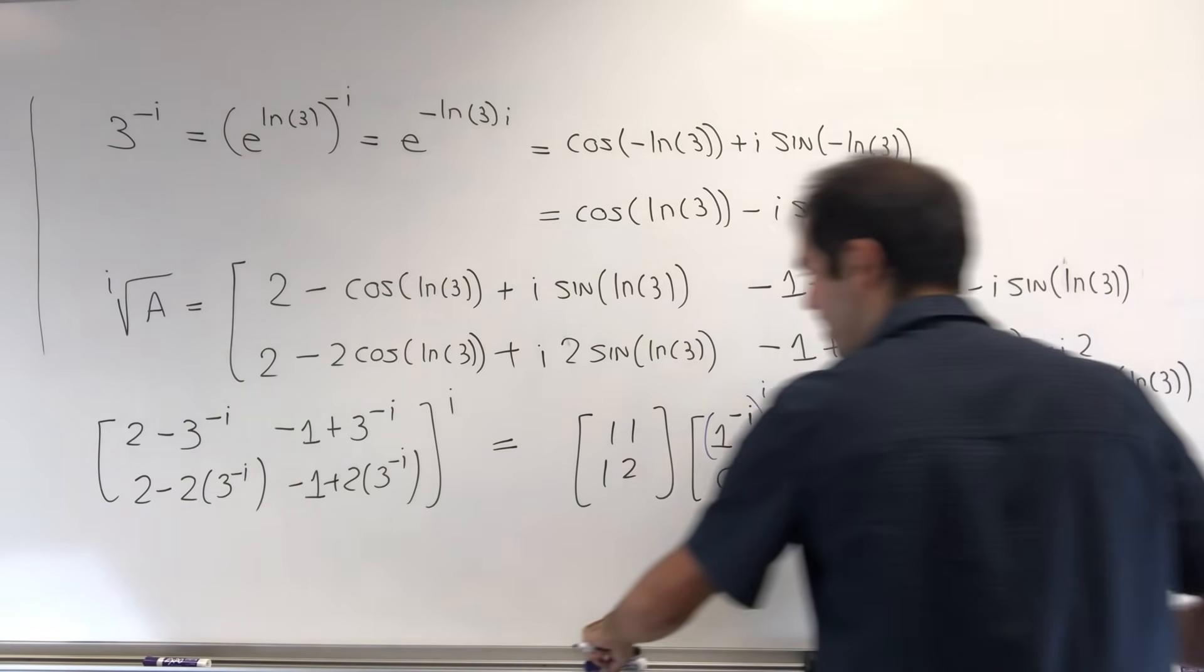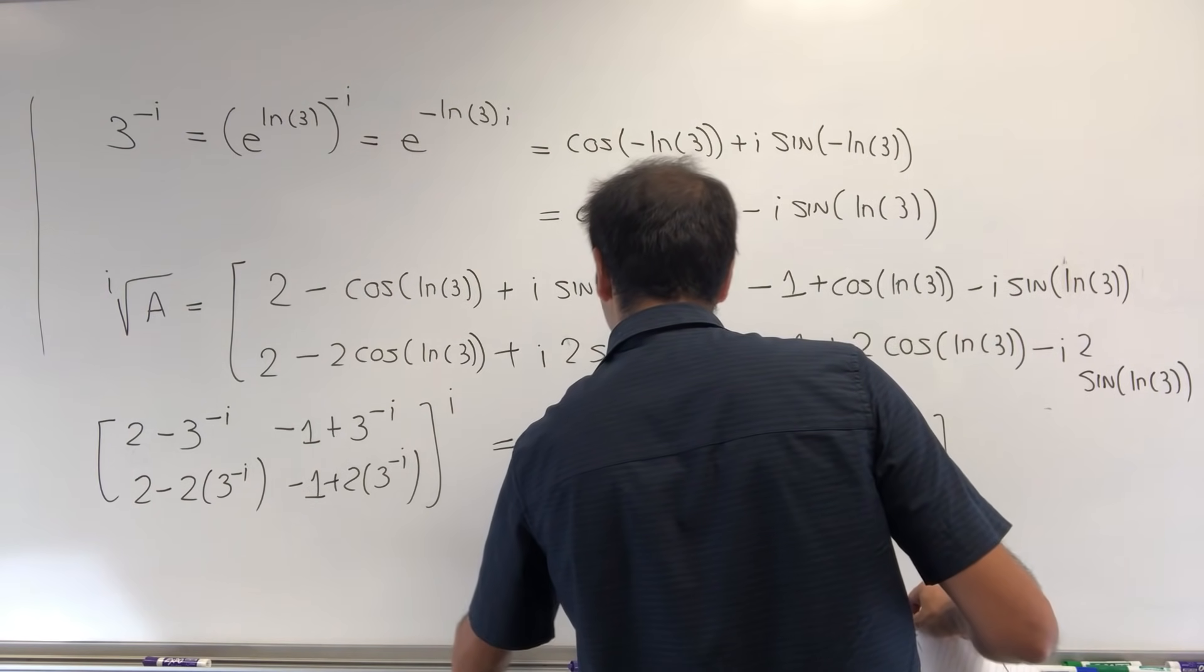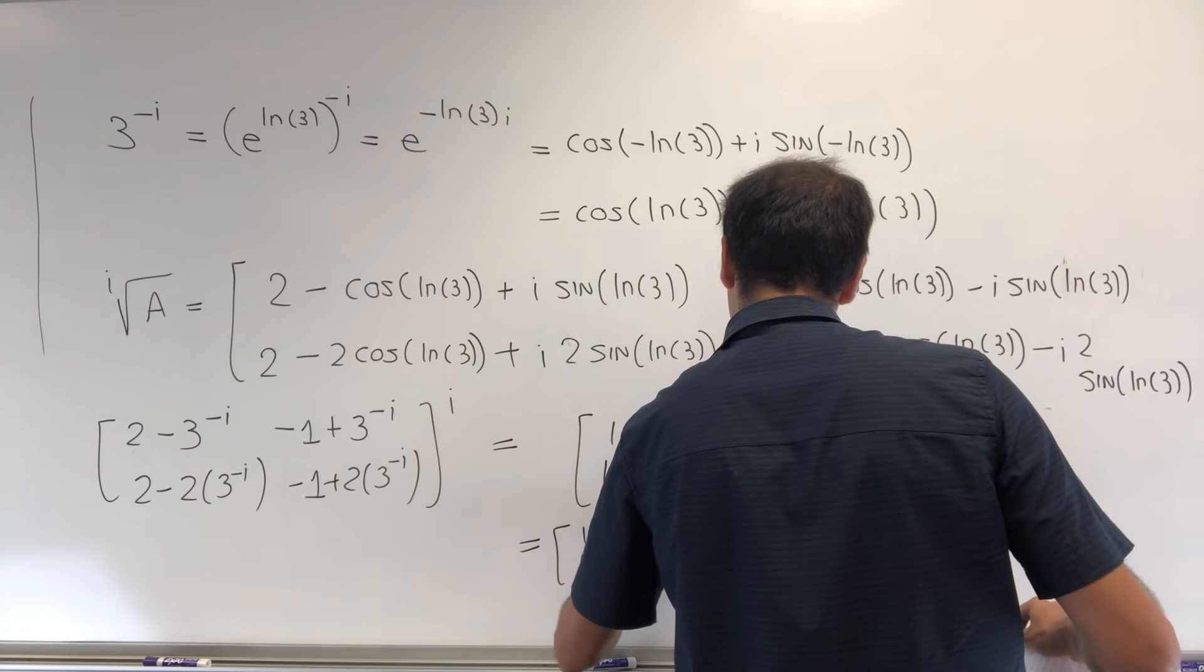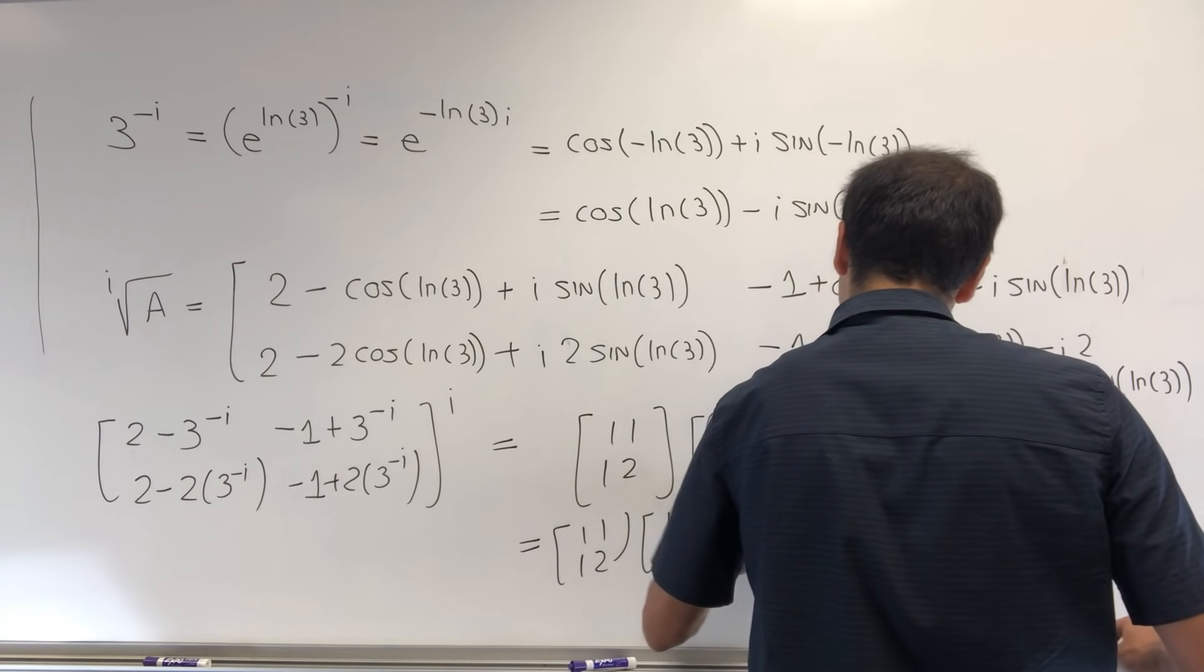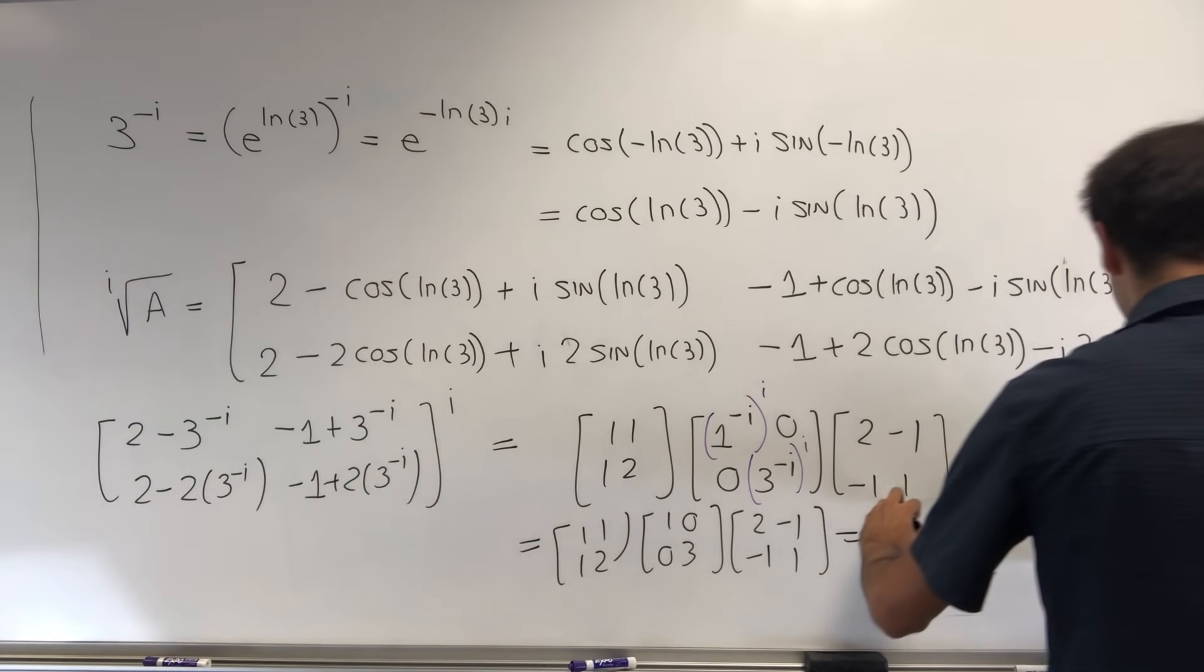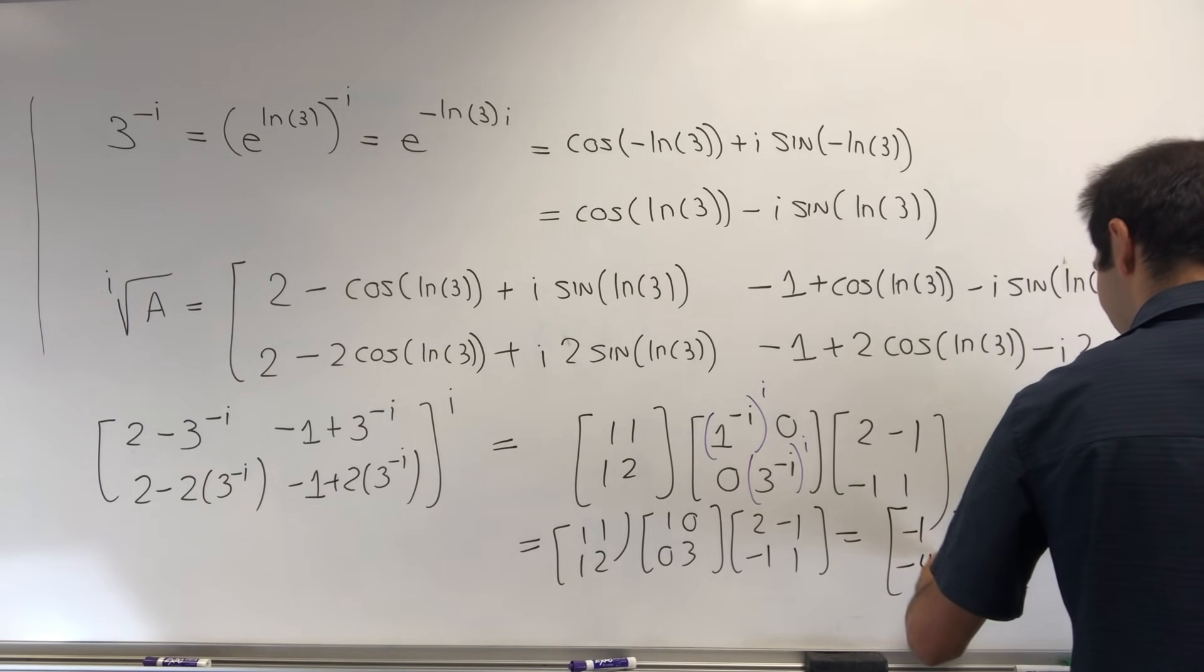But then the nice thing is this becomes [1, 1; 1, 2] times [1, 0; 0, 3] times [2, -1; -1, 1]. And then if you do the calculation, you should find that this is [-1, 2; -4, 5].